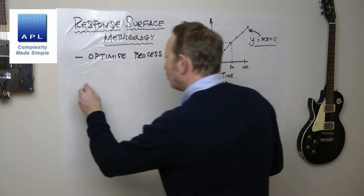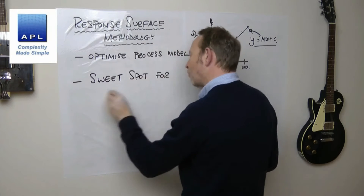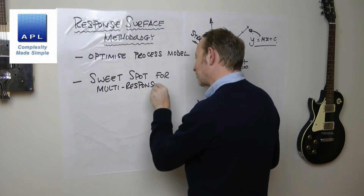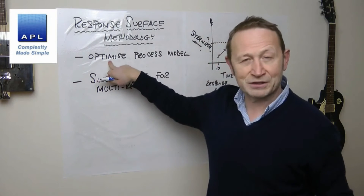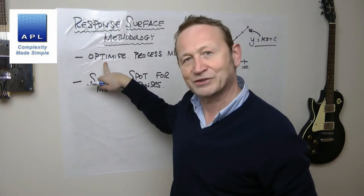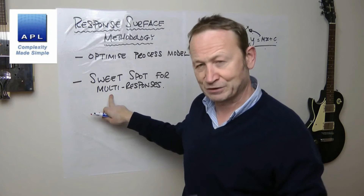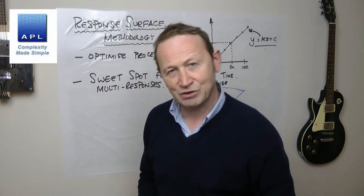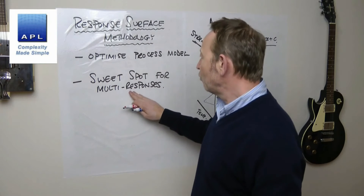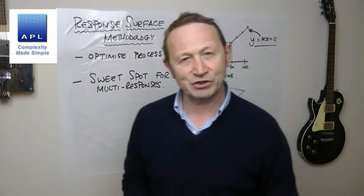Reason two is to find a sweet spot for multiple responses. Today the computer does this — you can ask the optimizer to hit two targets and it will find the spot or tell you it doesn't exist. But back then, the technique for hitting the sweet spot was to use response surface methodology — specifically something called a contour plot.